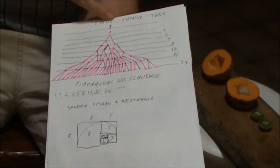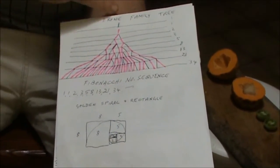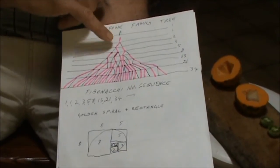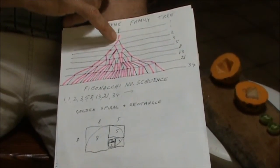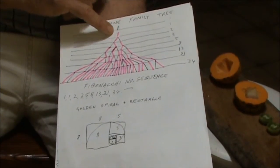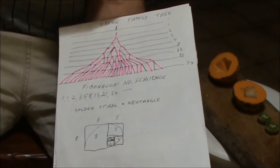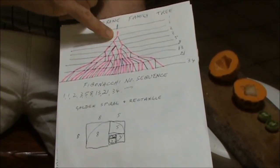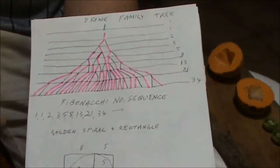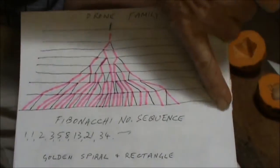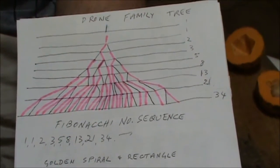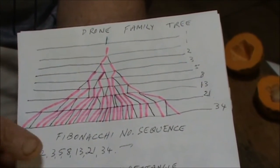If you follow the family tree of the drone, with the female segment drawn in pink and the male in black, you can count the individuals at each generation and find the Fibonacci numbers appearing in the drone's family tree.